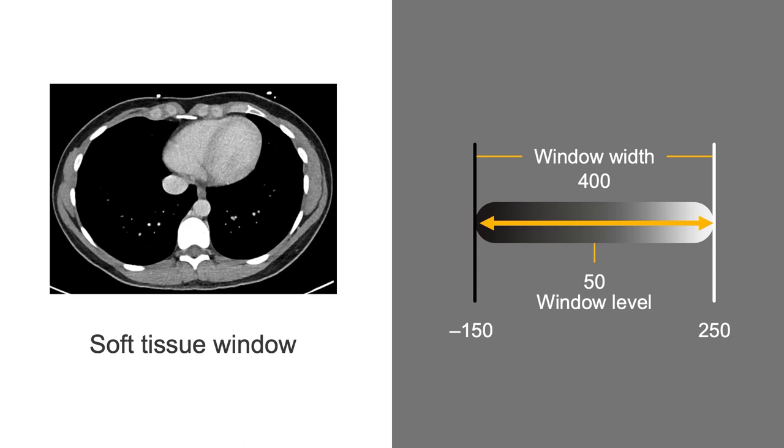Everything with a Hounsfield unit value below –150 will appear black, and everything with a Hounsfield unit value greater than 250 will appear white. These window settings concentrate the grayscale differences over soft tissue structures. Remember, the center point is 50, right in the soft tissue range.